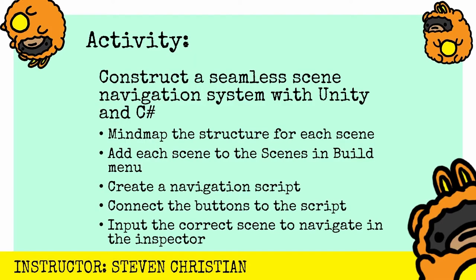Now time to apply what we learned with an activity. We're going to construct a seamless scene navigation system with Unity in C-sharp. Some key steps to remember: mind map the structure for each scene, add each scene to the Scenes and Build menu, create a navigation script using C-sharp, connect the buttons to the script, then input the correct scene to navigate in the inspector. After that, you have a functional, seamless navigation system that you can interact with. Go ahead and give it a try and post a reply in the comments to let me know how it goes. And if you're not in a hurry, go ahead and join me as I work on this project in real time.